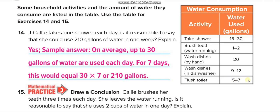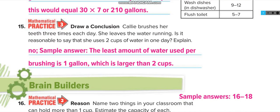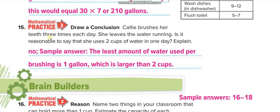If Kelly takes one shower each day, is it reasonable to say that she could use 210 gallons in one week? Let's say we choose the maximum, 30 gallons. In one week we have 7 days, so 30 times 7 equals 210. We can say yes.